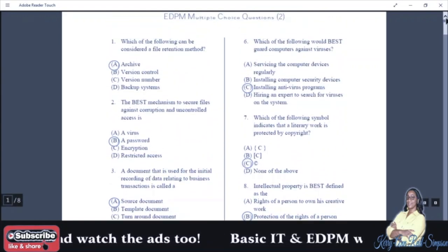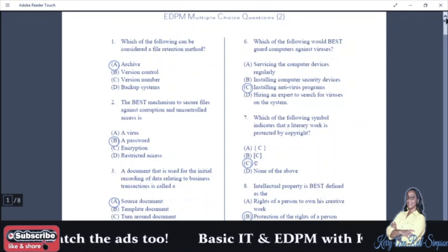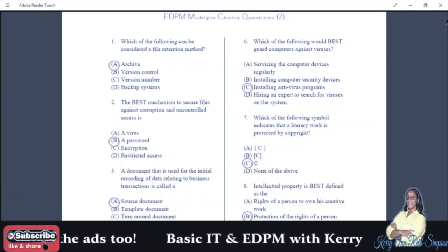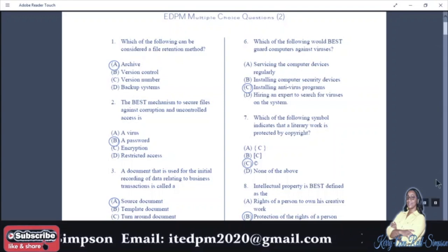Number six: which of the following best guards computers against viruses? Your answer is C, installing antivirus programs. Number seven: which of the following symbol indicates that a literary work is protected by copyright? Your answer is C. Once you see the C in a circle, that sign represents the copyright symbol.